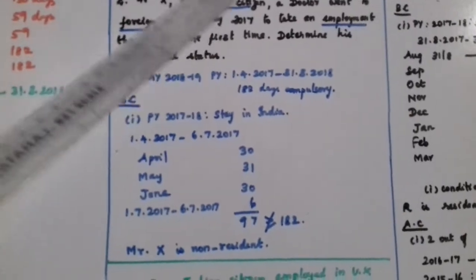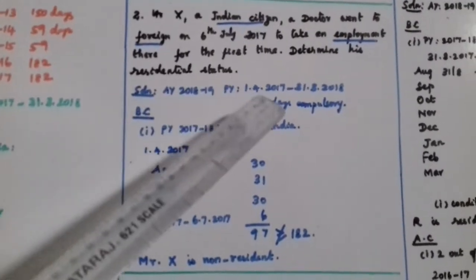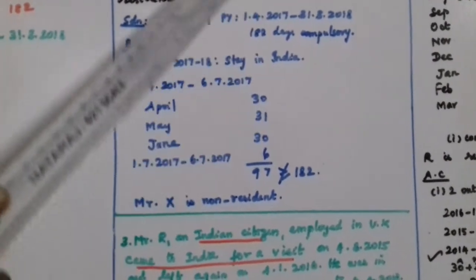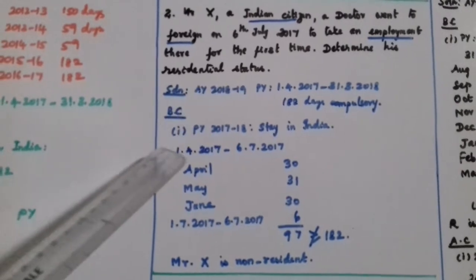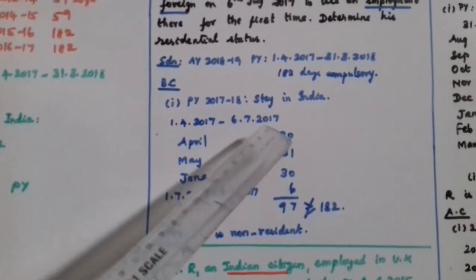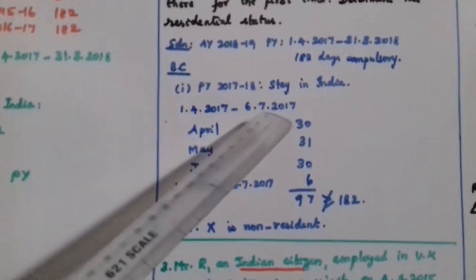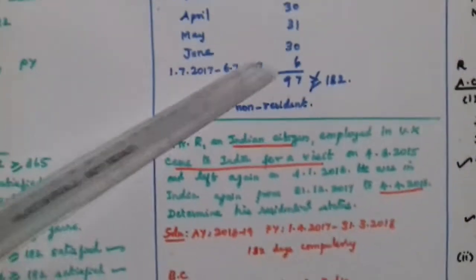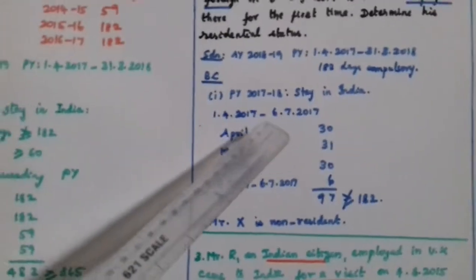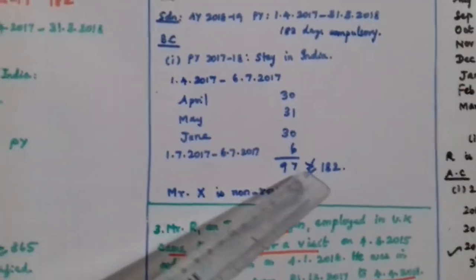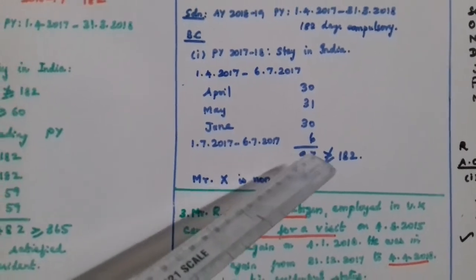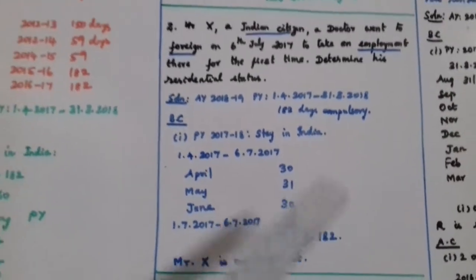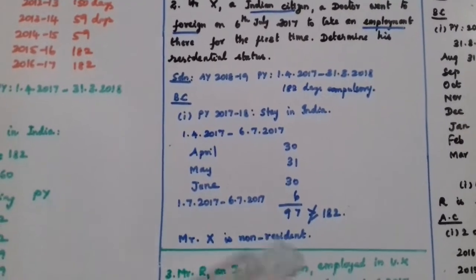For the exceptional case of an Indian citizen going abroad for employment, only 182 days is applicable. Stay in India in the previous year 2017-18: he left on 6th July 2017, so his stay covers April, May, June — approximately 97 days — which is less than 182 days. Therefore, he is a Non-Resident. No additional conditions need to be checked.